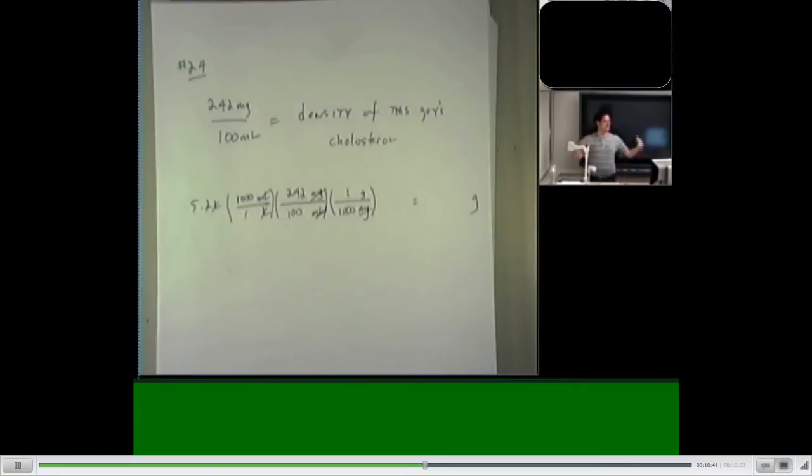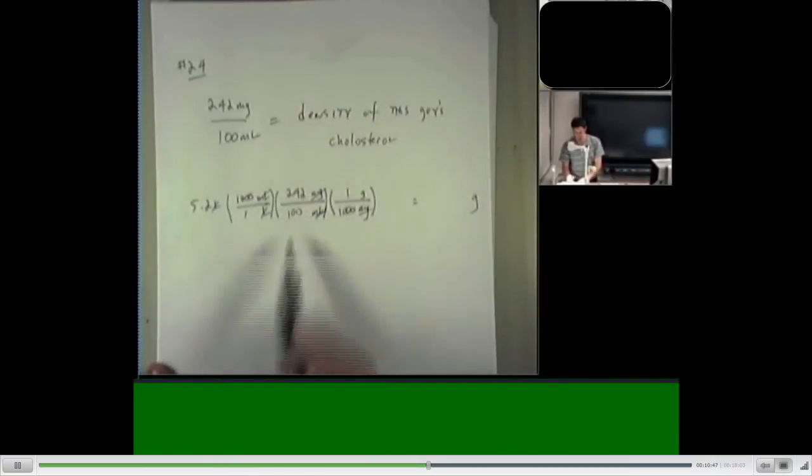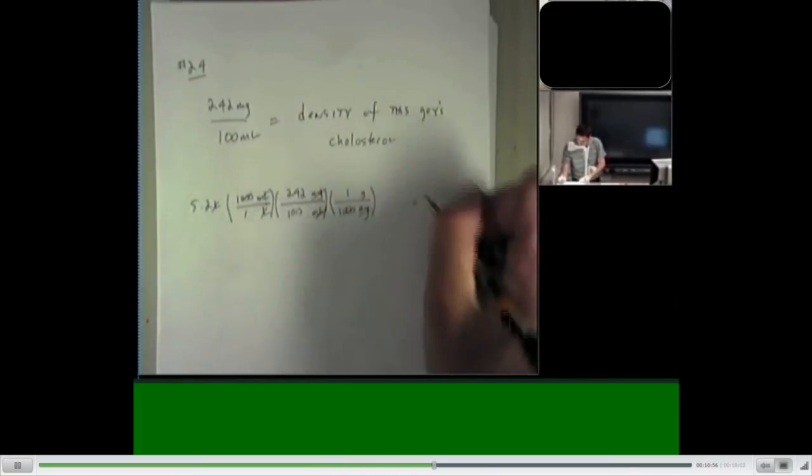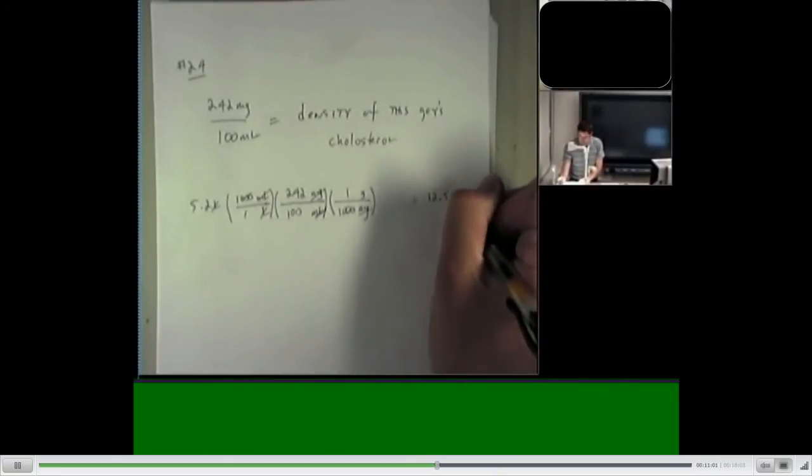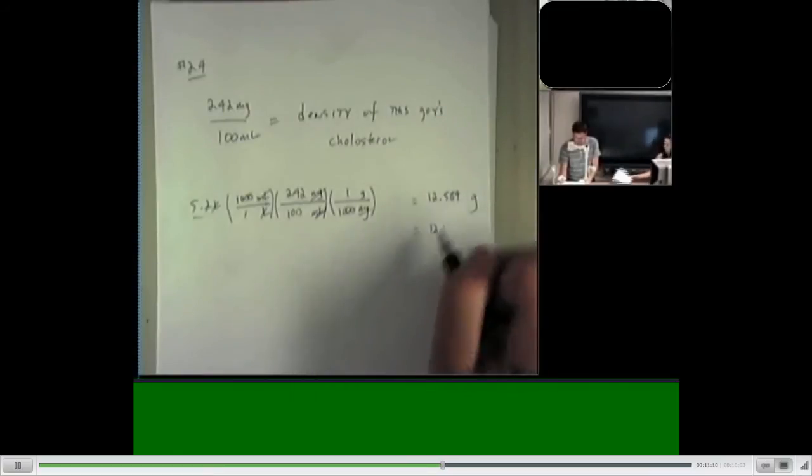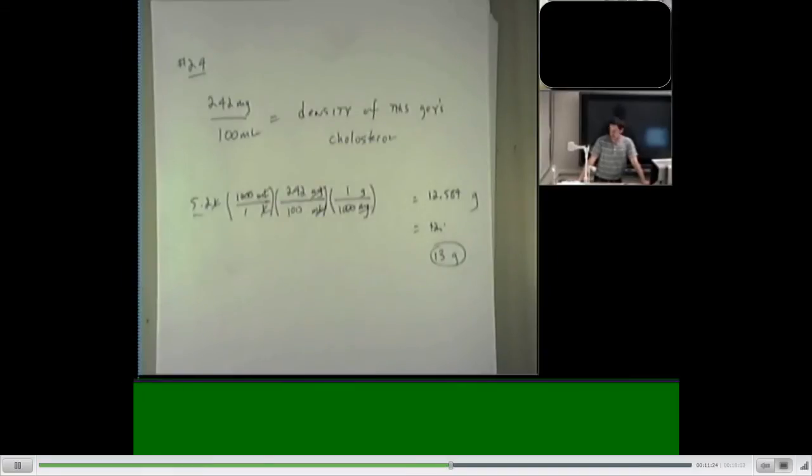Now, all we have to do is times this jump through. You'll notice that the thousands cancel each other out. So what I'm doing is taking 5.2 times 242 divided by 100. And the number that I get is? I don't know. Someone tell me. 12.584. We, of course, want to select the right number of significant figures. I'll go ahead and write down 12.584. This is a multiplication problem. The guy who has the smallest number of significant figures is this one, 5.2. So I'm going to do 12 points. I guess 12. I guess 13, I think. 13 grams would be the correct number of significant figures.